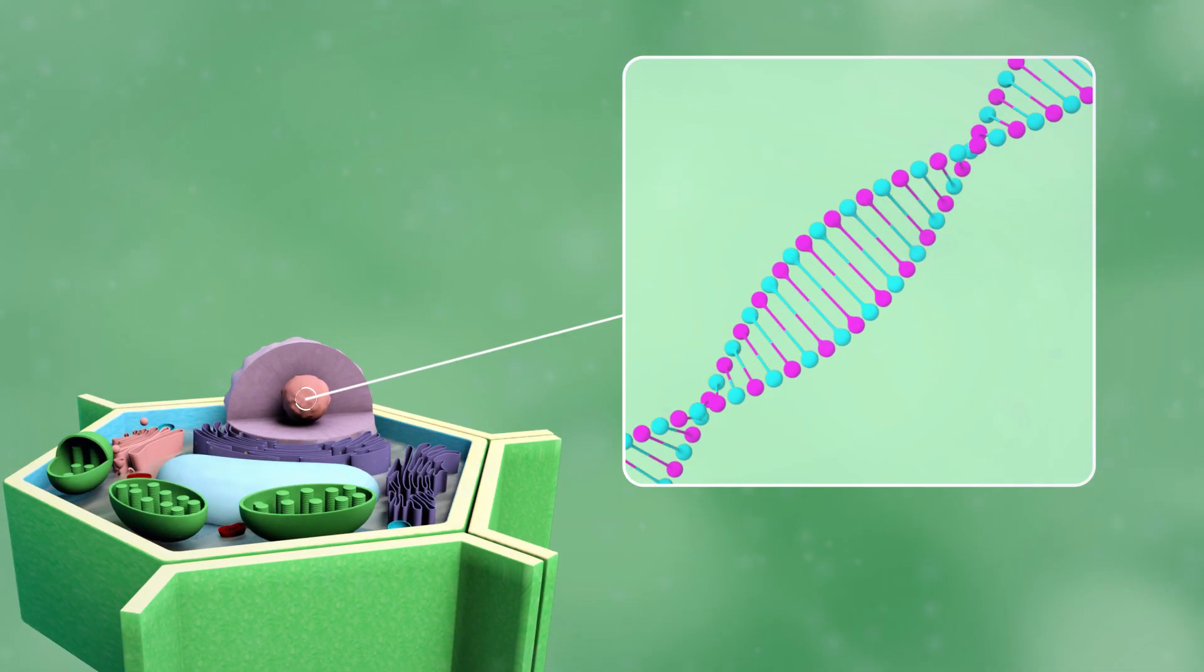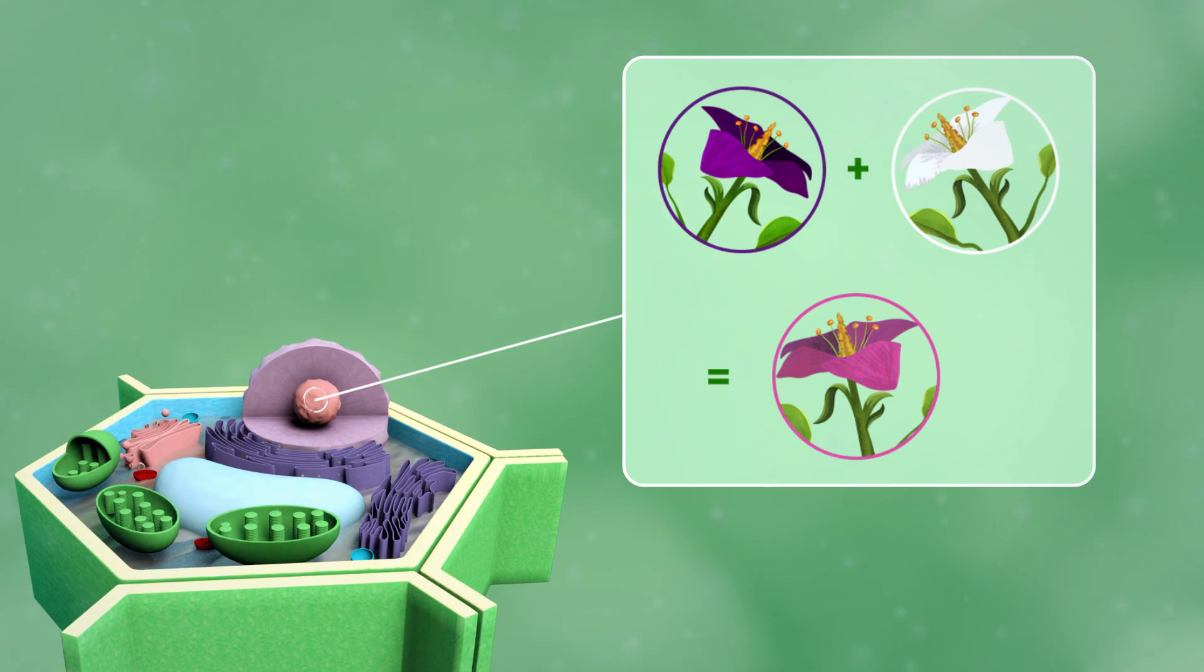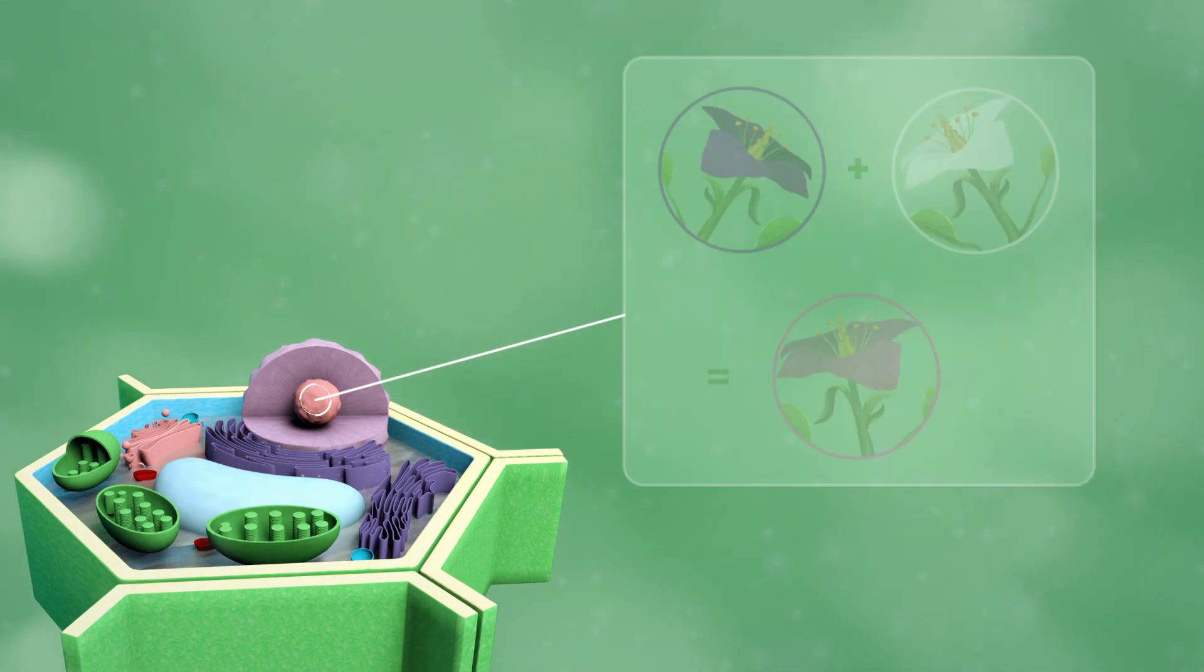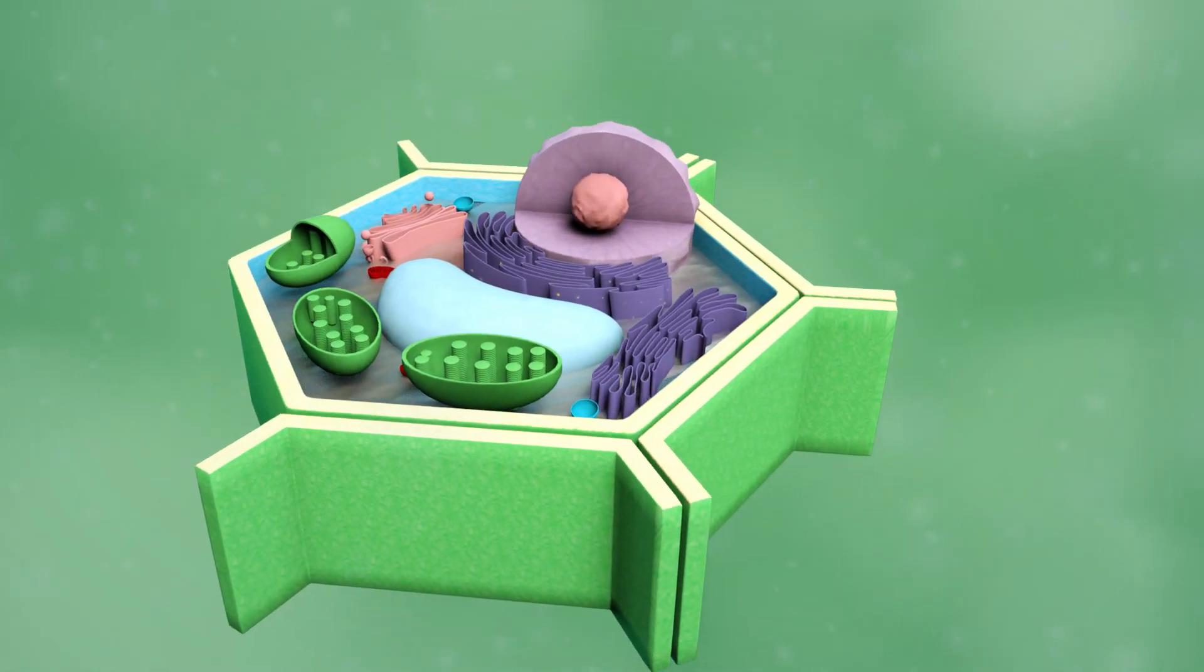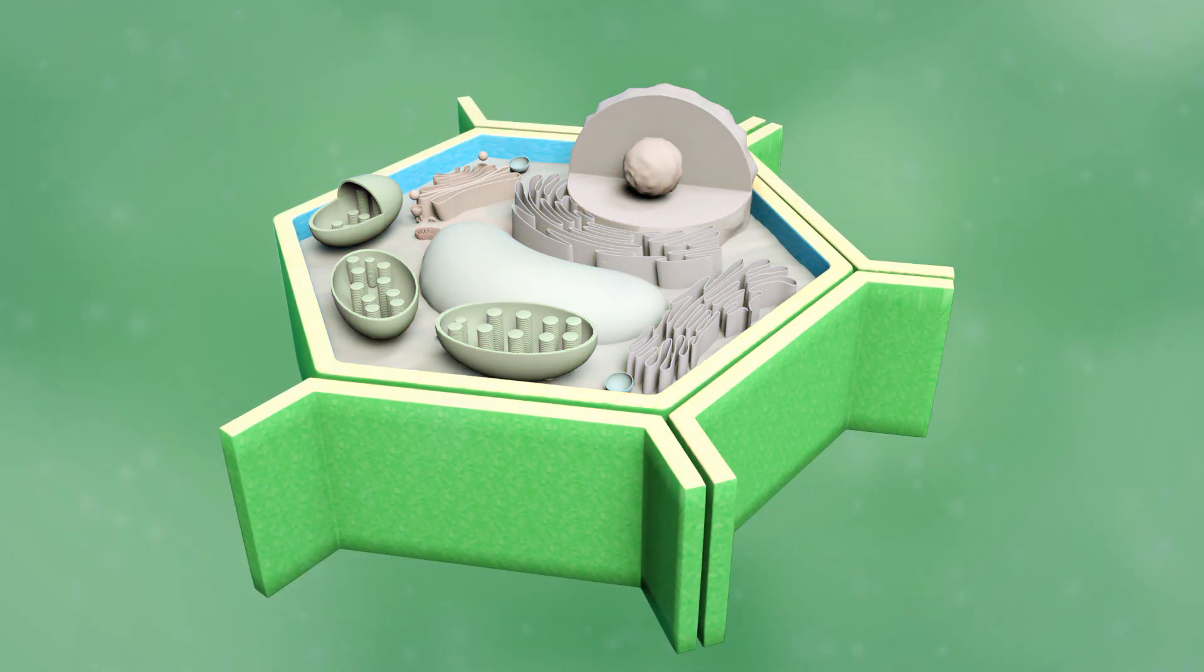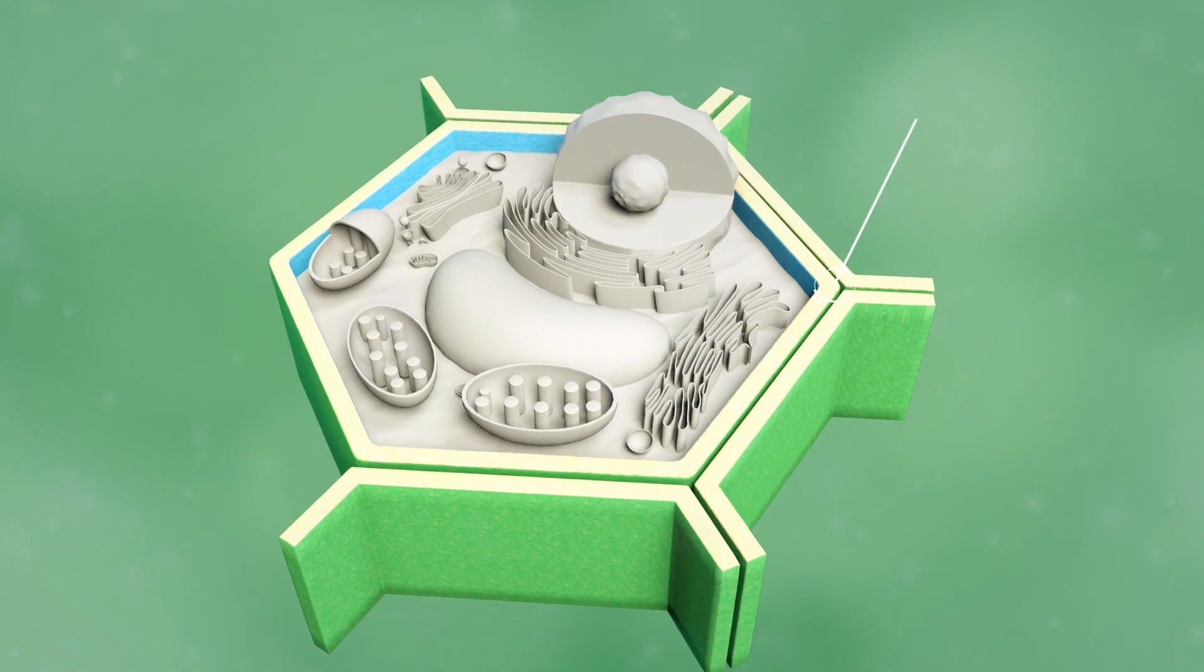When plants reproduce, the genetic material will pass on to the new plant. For this reason, new plants will have the same characteristics.